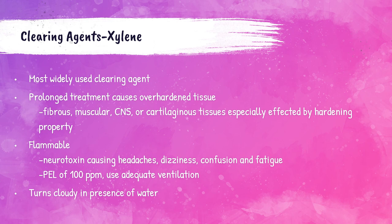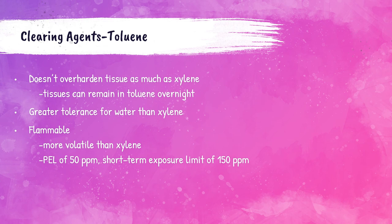The most commonly used clearing agent is xylene. Prolonged exposure to xylene causes hardening of tissue; tissues especially at risk include fibrous, muscular, central nervous system, and cartilaginous tissues. Xylene is quick-acting and leaves the tissue transparent. It is considered both flammable and hazardous as a neurotoxin, cannot be disposed of in the sink, and has an OSHA PEL of 100 parts per million. When xylene is mixed with water it turns cloudy, so if xylene appears cloudy it needs to be replaced as it has been contaminated with water.